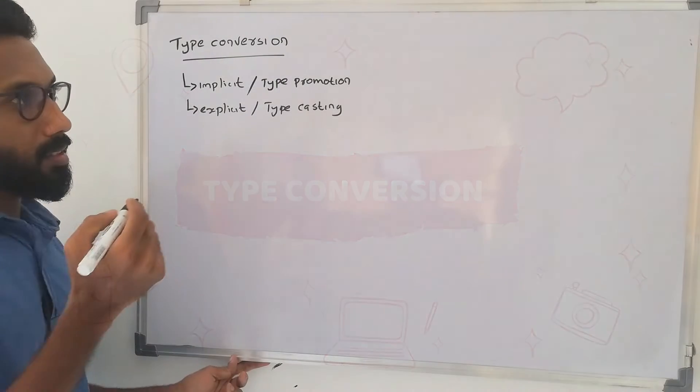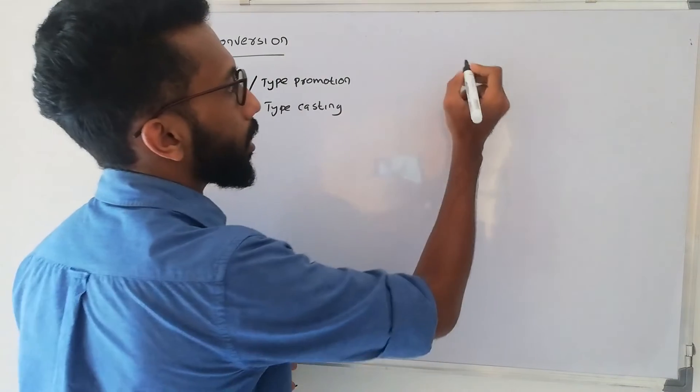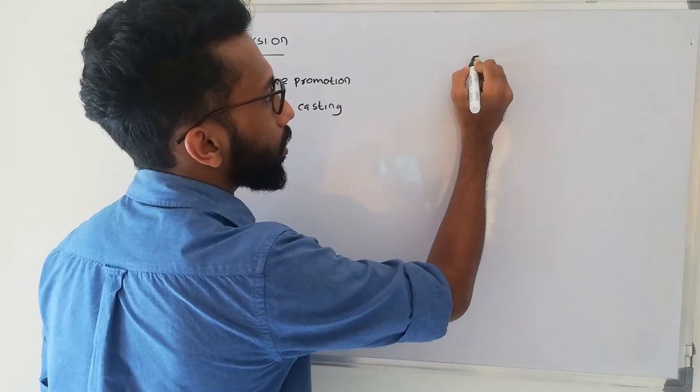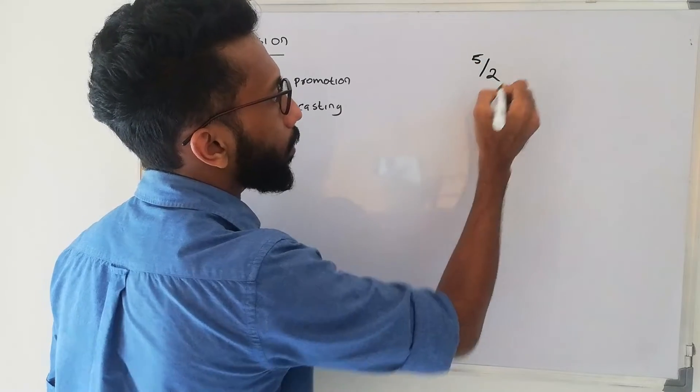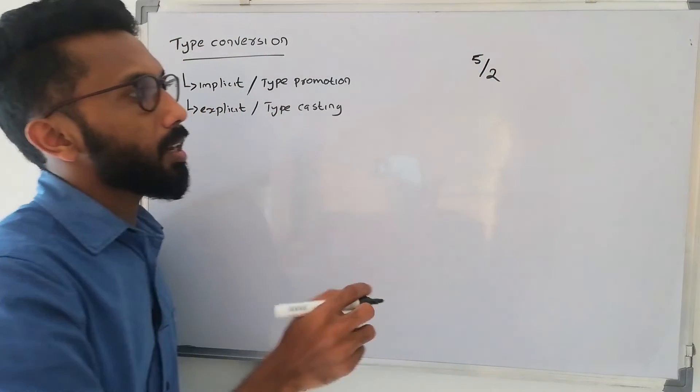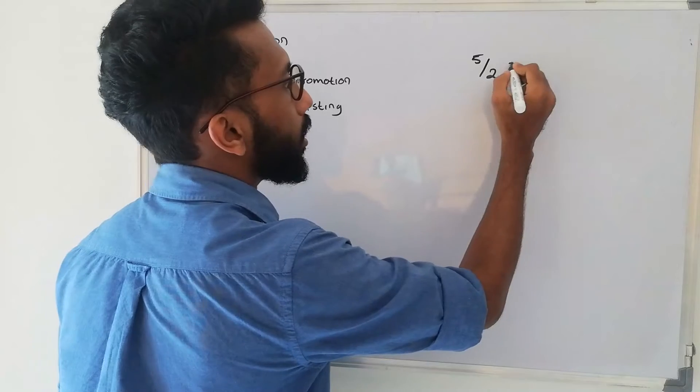What is the type of conversion? I will write the expression 5 by 2. It is not an integer. How does it be returned?